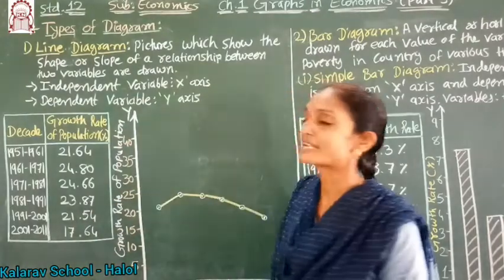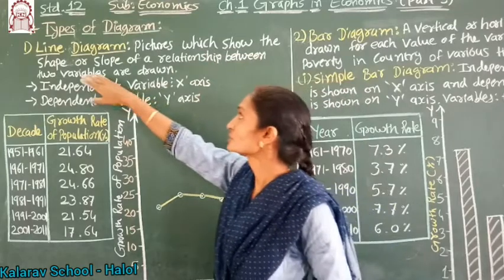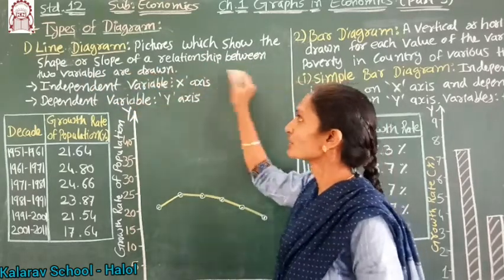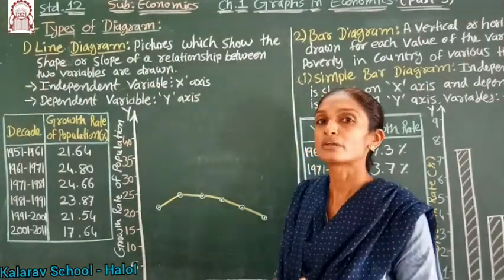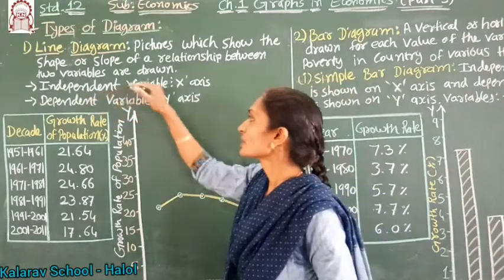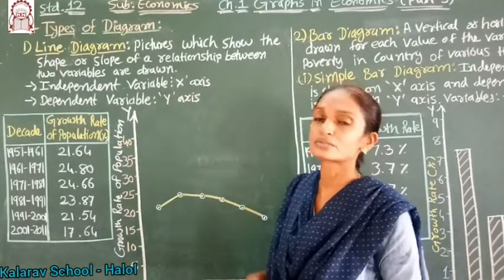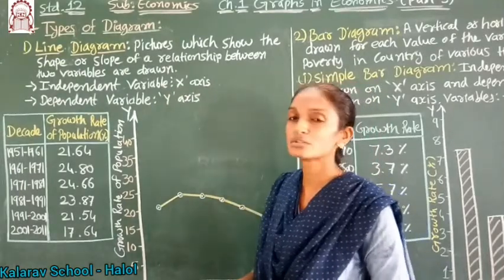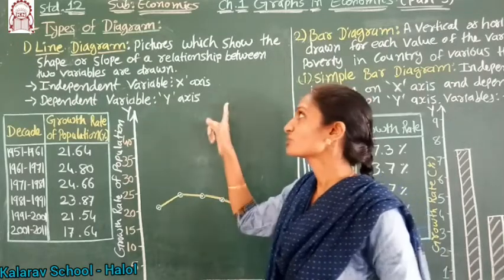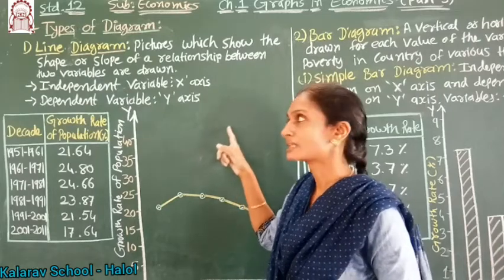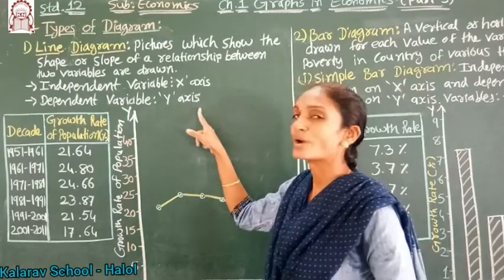The first type is a line diagram. Pictures which show the shape or slope of the relationship between 2 variables are drawn. There are 2 types of variables: independent variables and dependent variables. Independent variables are shown on the x-axis and dependent variables are shown on the y-axis. Be careful — this is a 1-mark question and very important: which variables are on which axis? X-axis: independent variable. Y-axis: dependent variable.